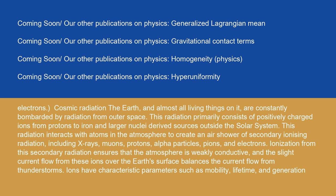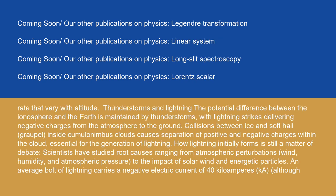This radiation interacts with atoms in the atmosphere to create an air shower of secondary ionizing radiation, including x-rays, muons, protons, alpha particles, pions, and electrons. Ionization from this secondary radiation ensures that the atmosphere is weakly conductive, and the slight current flow from these ions over the Earth's surface balances the current flow from thunderstorms. Ions have characteristic parameters such as mobility, lifetime, and generation rate that vary with altitude.